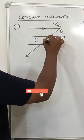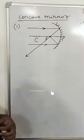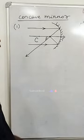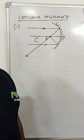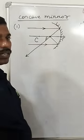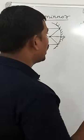So, at F, there is an image formed. At F, which is real, inverted, and highly diminished — that is, point size. Point size is also known as highly diminished.